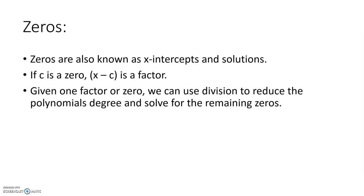So zeros are also known as x-intercepts or solutions. If c is a zero, x - c is a factor. And given one factor or zero, we can use division to reduce the polynomial's degree and solve for the remaining zeros.